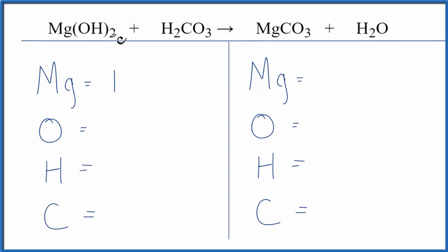Magnesium, we have 1. The subscript of 2 applies to everything in parentheses. So we have 2 times 1, 2 oxygens, plus we have 3 oxygens here. That gives us 5 total oxygen atoms.